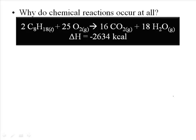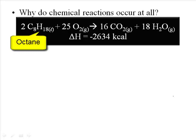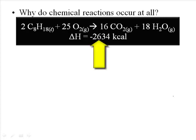Let's look at an example. This is the chemical reaction that summarizes what happens when octane is combusted in the presence of oxygen. Octane, C8H18, is one of the major components of gasoline. It reacts with 25 molecules of oxygen from the atmosphere and produces 16 molecules of carbon dioxide gas and 18 molecules of H2O, usually in the form of water vapor. The reason you do this reaction in your car is not to produce carbon dioxide and water, but to produce energy. The delta H of this reaction is negative 2,634 kilocalories.